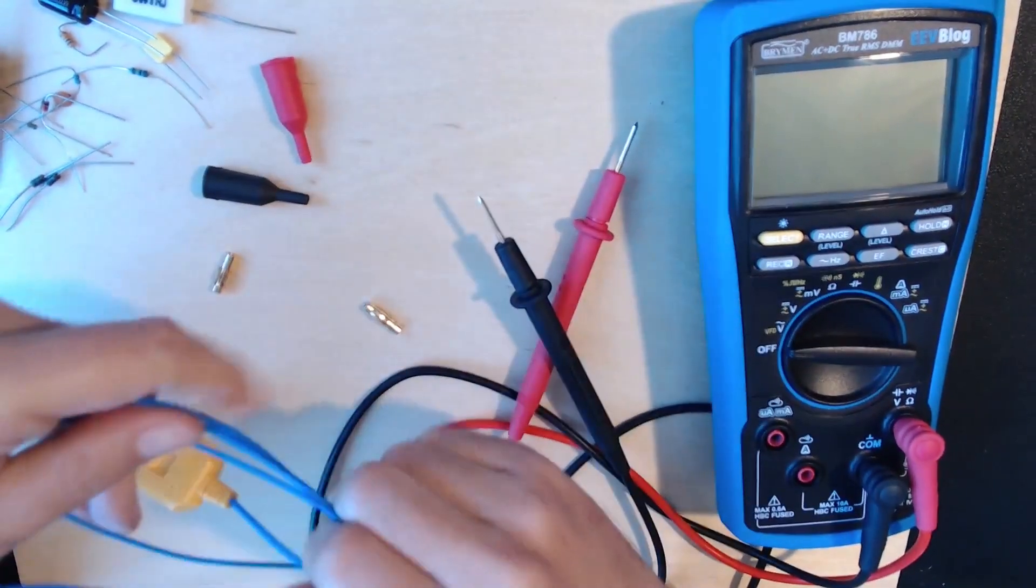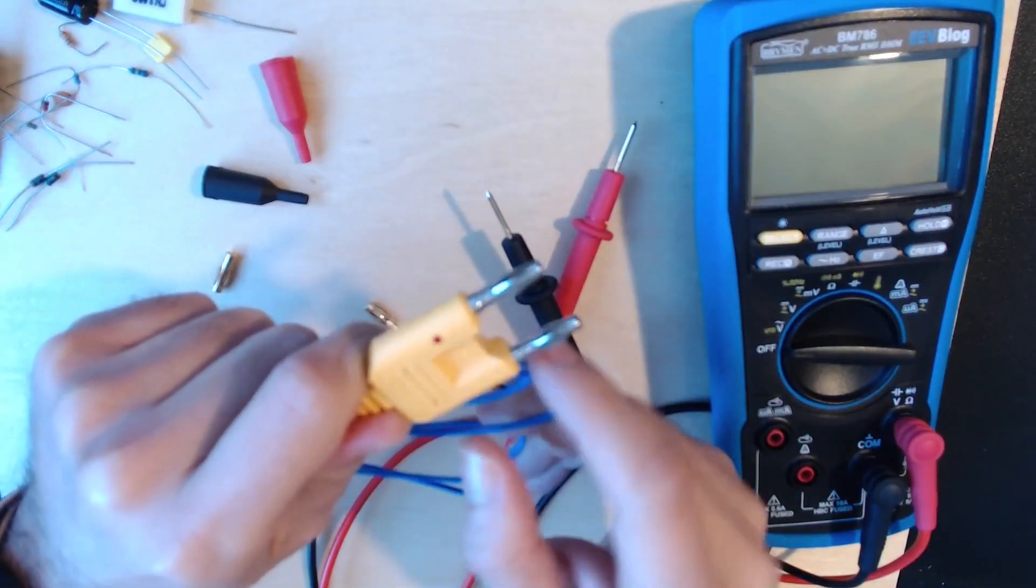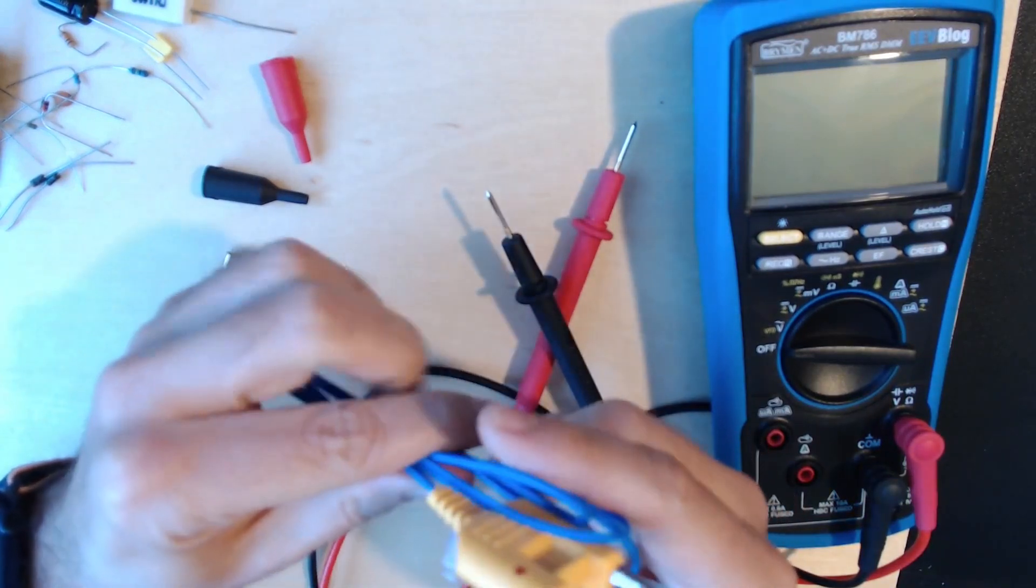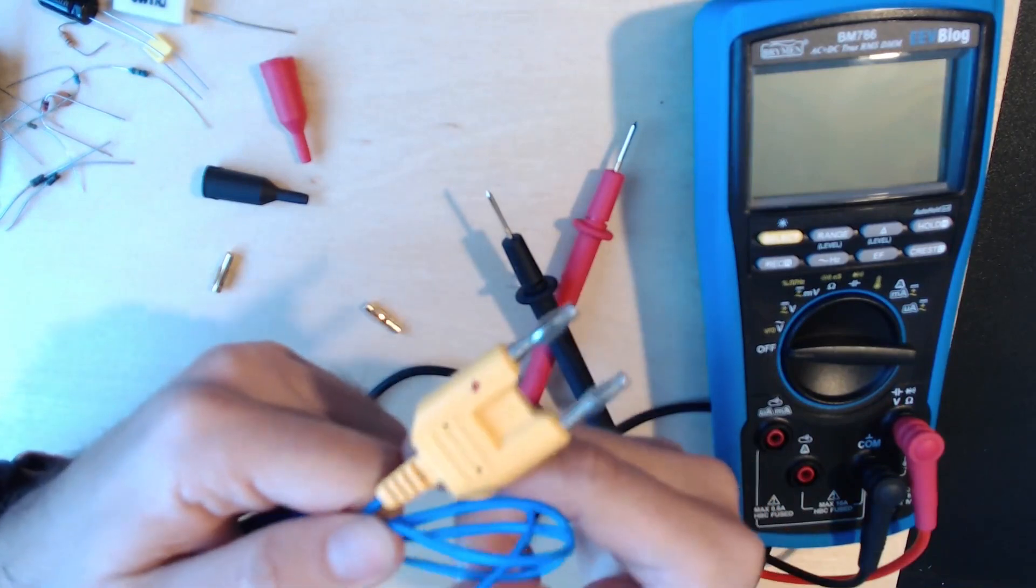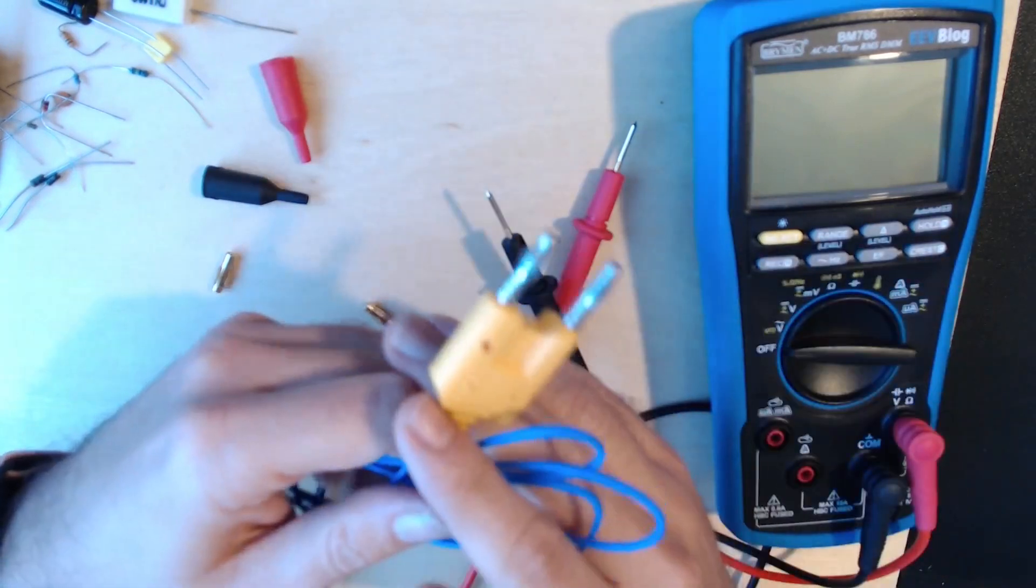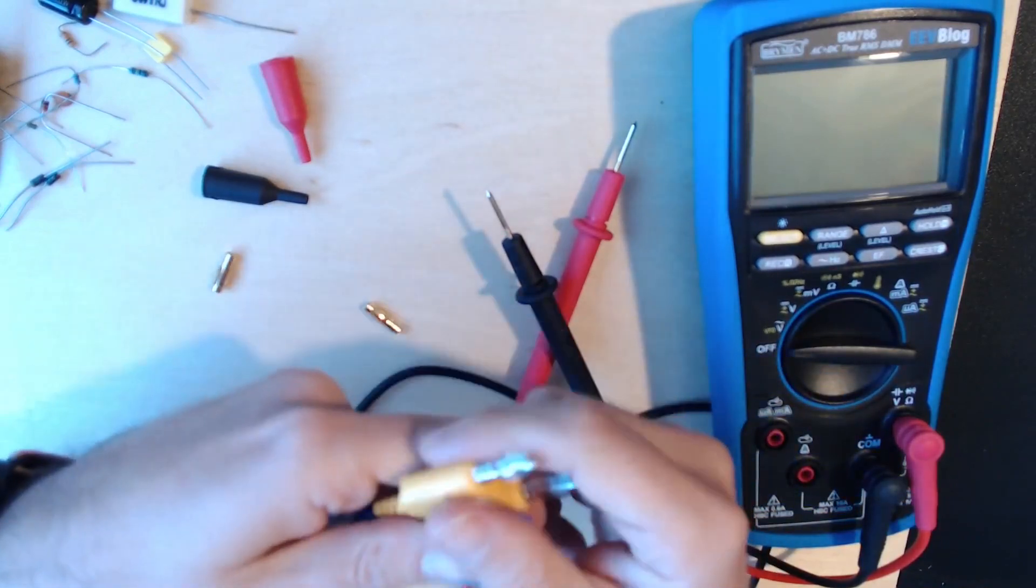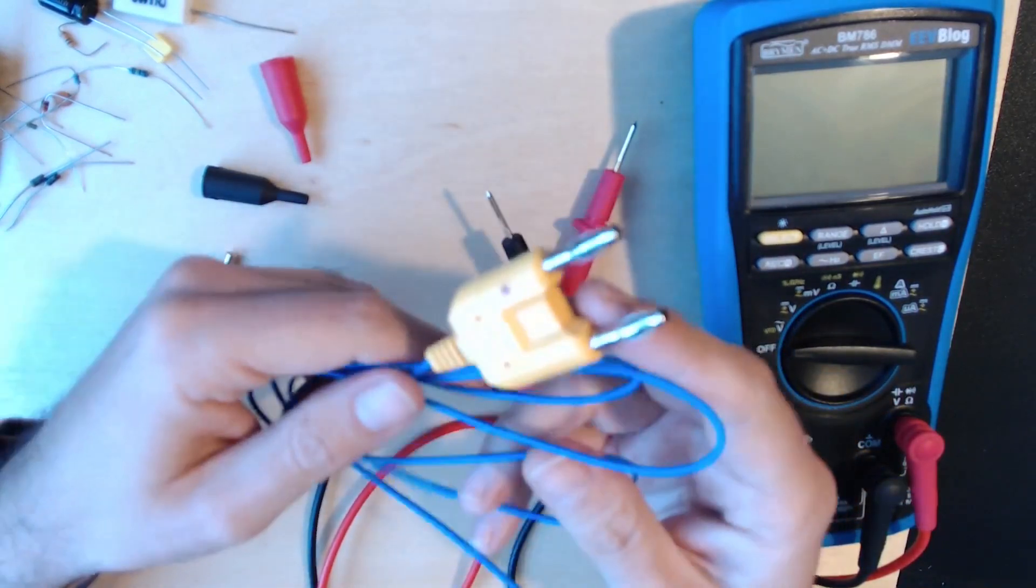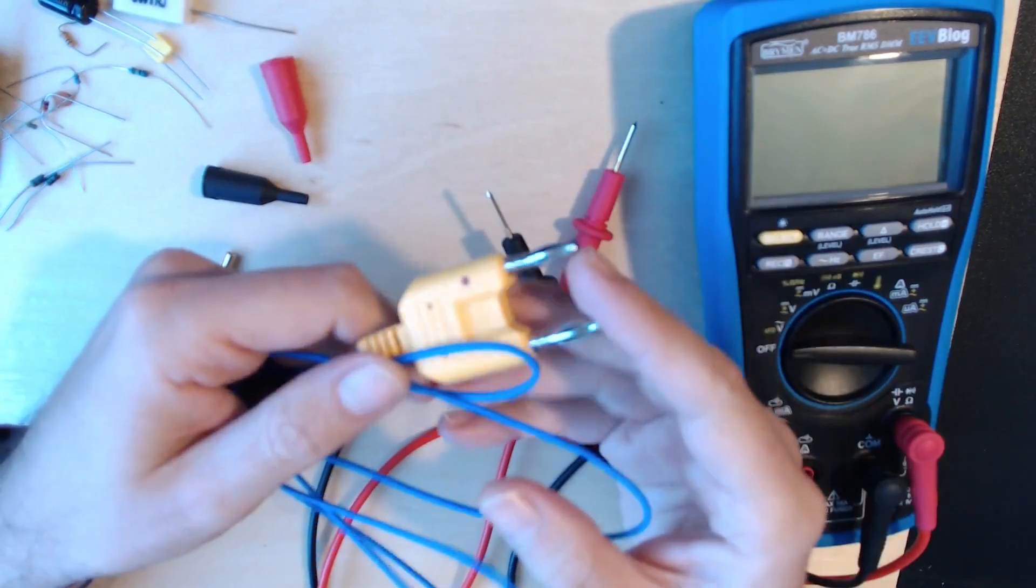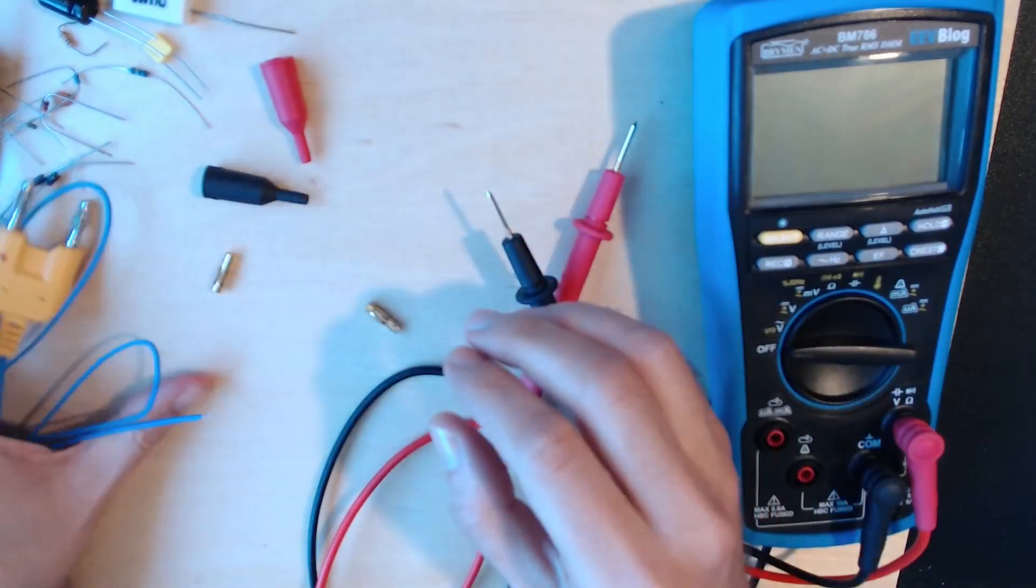You have these insulation caps which you can pop onto the probes to reduce the exposure of the contacts. They're rated for one kilovolt as well. We also get a K-type thermocouple. The only problem with this thermocouple is that in the documentation there are some specs about what the device can do with the thermocouple, but you don't have any specs on the thermocouple itself, so you don't know the temperature ranges.